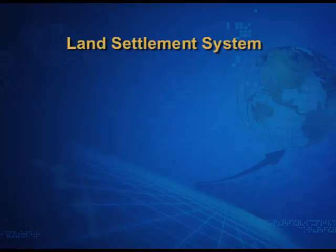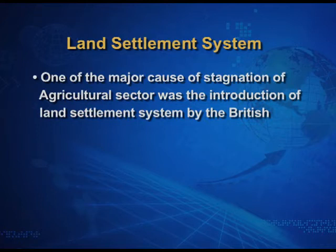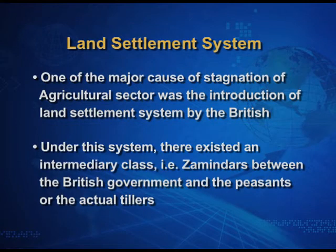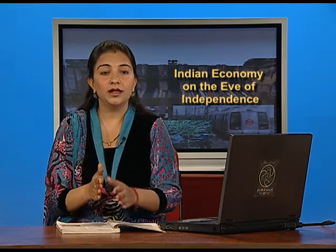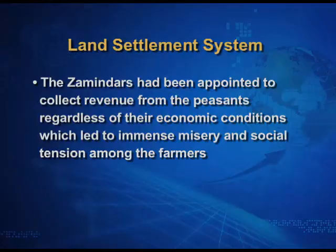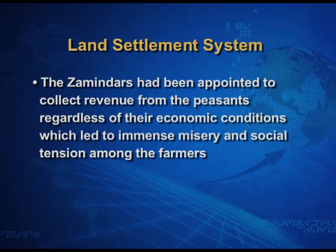Land settlement system: One of the major causes of the stagnation of the agricultural sector was the introduction of the land settlement system by the British. Under this system, there existed an intermediary class — the zamindars — between the British government and the peasants or the actual tillers. This zamindari class had been appointed by the British to collect revenue from the peasants regardless of their economic conditions, which led to immense misery and social tension among the farmers.